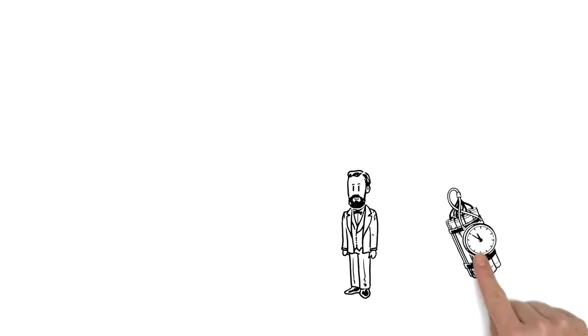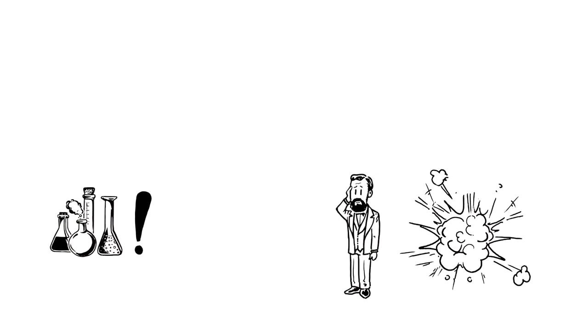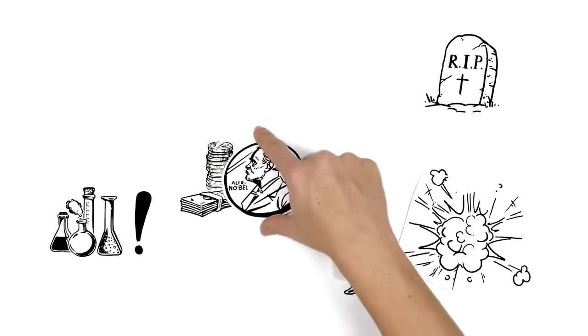He's known for inventing dynamite, a breakthrough in chemistry. However, having mostly invented explosives, he worried about how people would remember him. So when he died, he left most of his wealth in a trust to fund what would later be known as the Nobel Prizes.